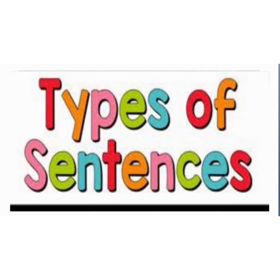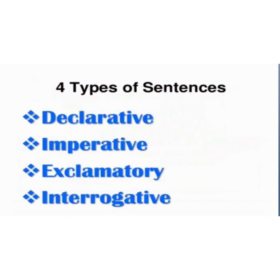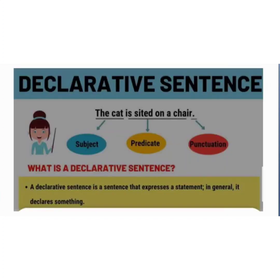These are some examples of sentences. But sentences can further be categorized into four parts — declarative, imperative, exclamatory, and interrogative sentences. In this class, we will discuss all these types one by one.